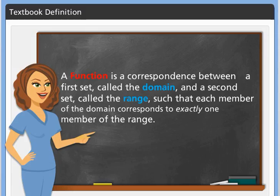Let's start with the textbook definition. A function is a correspondence between the first set, called a domain, and a second set, called the range, such that each member of the domain corresponds to exactly one member of the range.